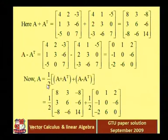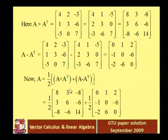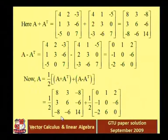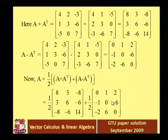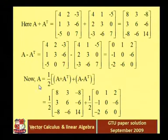Therefore A can be expressed as a sum of symmetric and skew symmetric matrices. A equals 1/2 times (A plus A transpose) plus 1/2 times (A minus A transpose), that is 1/2 of the matrix 8, 3, minus 8 / 3, 6, minus 6 / minus 8, minus 6, 14 plus 1/2 of the matrix 0, 1, 2 / minus 1, 0, minus 6 / minus 2, 6, 0.